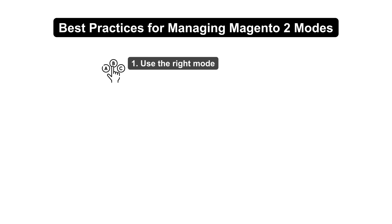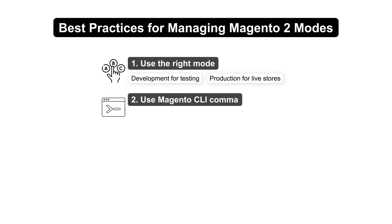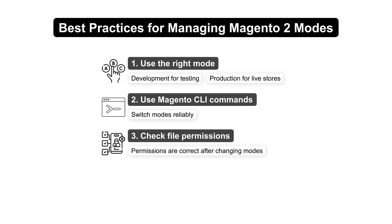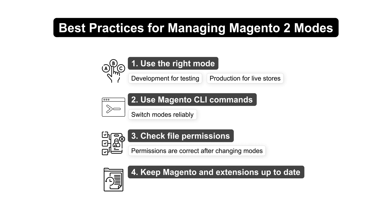Let's look at the best practices for managing Magento 2 modes. Select the mode that best fits your environment's needs — developer for testing, production for live stores. Use Magento's CLI commands to switch modes reliably. Ensure file permissions are correct after changing modes. Keep your Magento installation and extensions up-to-date to benefit from security patches and performance improvements.